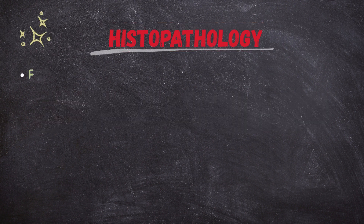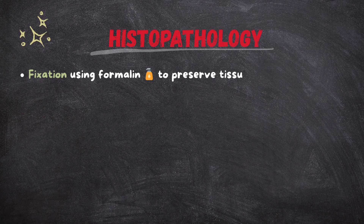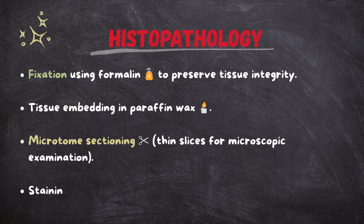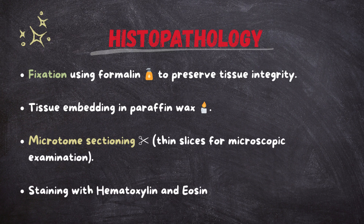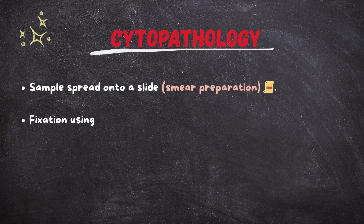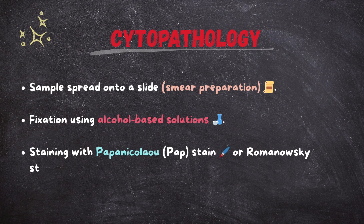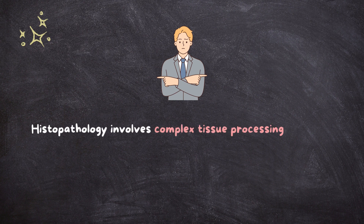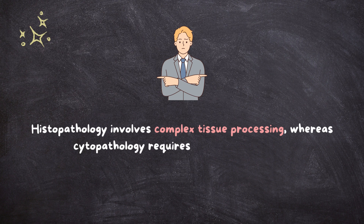Histopathology involves fixation using formalin to preserve tissue integrity, tissue embedding in paraffin wax, microtome sectioning into thin slices for microscopic examination, and staining with hematoxylin and eosin (H&E) or special stains. Cytopathology involves spreading the sample onto a slide for smear preparation, fixation using an alcohol-based solution, and staining with Papanicolaou (Pap) stain or Romanovsky stains. Key difference: histopathology involves complex tissue processing, whereas cytopathology requires minimal processing.